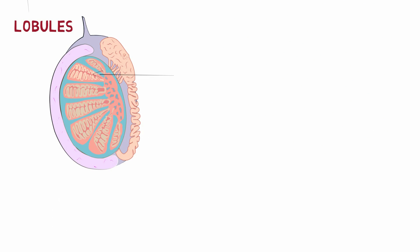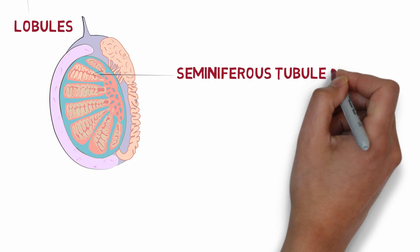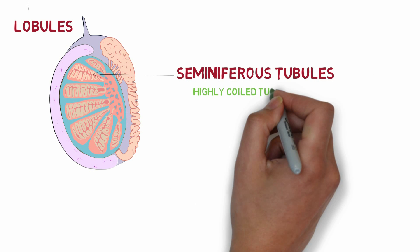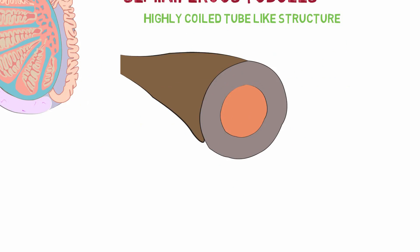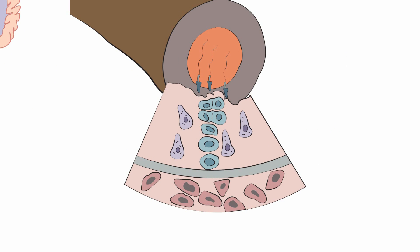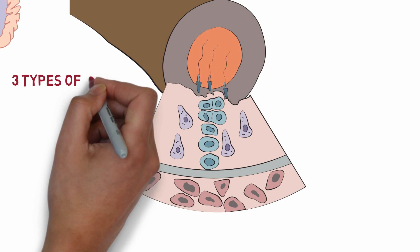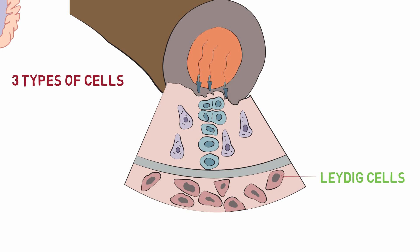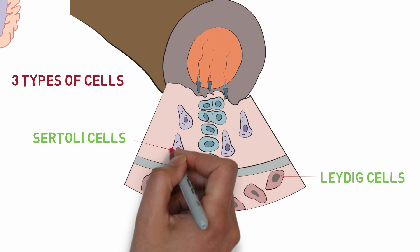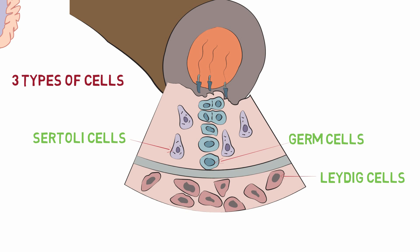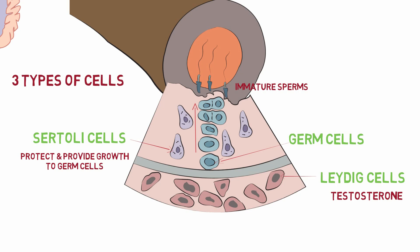These lobules contain seminiferous tubules, which are highly coiled tube-like structures. The wall of the seminiferous tubules contains three types of cells: the Leydig cells, Sertoli cells, and the germ cells. The Leydig cells have the primary function of producing the hormone testosterone. The germ cells differentiate towards the lumen of the seminiferous tubules into immature sperms. The Sertoli cells function to protect and provide growth to the developing germ cells.